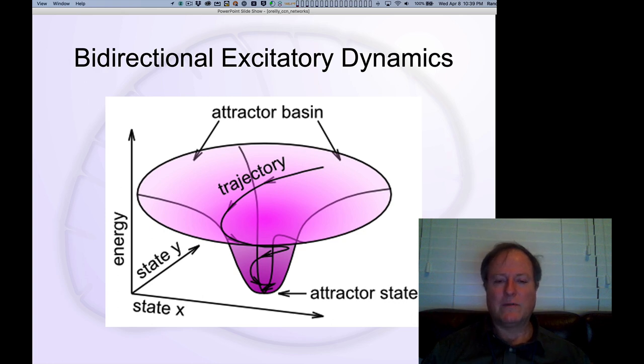This is actually a core principle of physics that the time evolution of physical systems works to minimize the overall energy of the system. This idea of attractor dynamics was originally explored by physicists who saw analogies between physical systems and neural networks. John Hopfield in particular formulated these dynamics for a network based on spin glass physical systems that have little magnetic fields oriented in different ways. As the interactions between nearest neighbors unfold, they coordinate and enter a lower energy coordinated state.